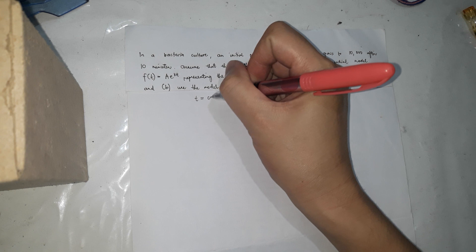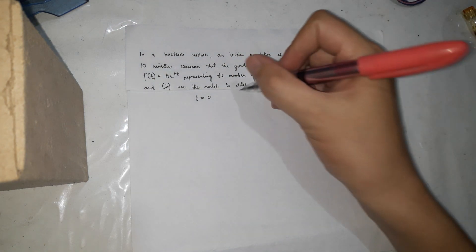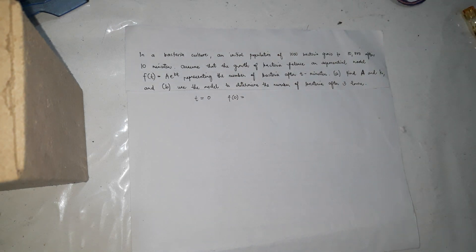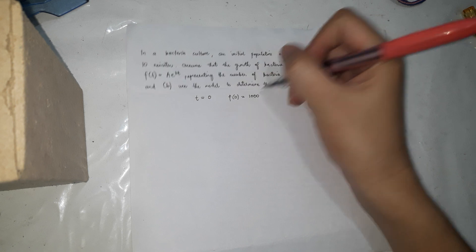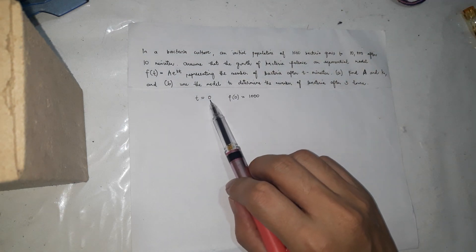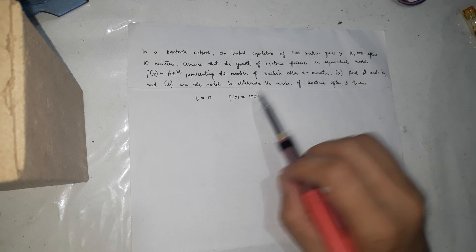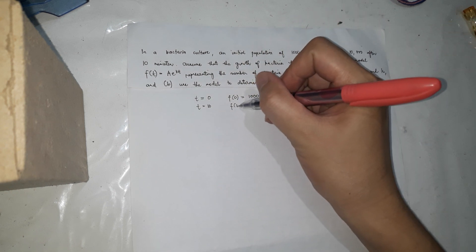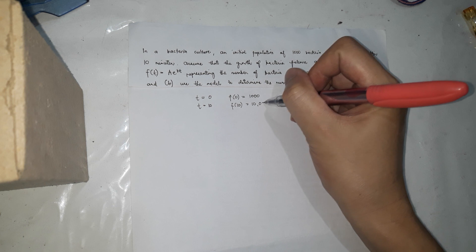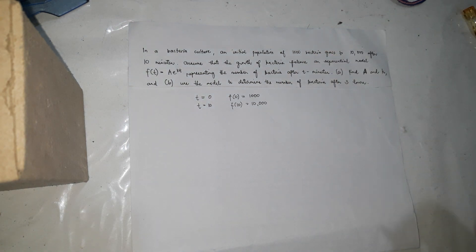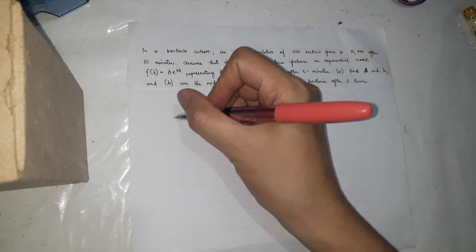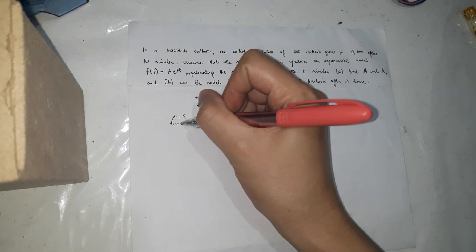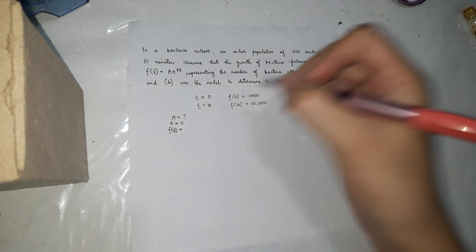So the first given is when t is 0, after 0 minutes, f(0) is how many bacteria? The initial amount. That's 1,000. So after 0 minutes elapsed, it's 1,000. So 1,000 when t equals 0 minutes. But after 10 minutes, the 1,000 became f(10) equals 10,000. So the first thing we're going to do is find a and k. So to find a, we're going to use the first given. T equals 0 and f(t) equals 1,000.